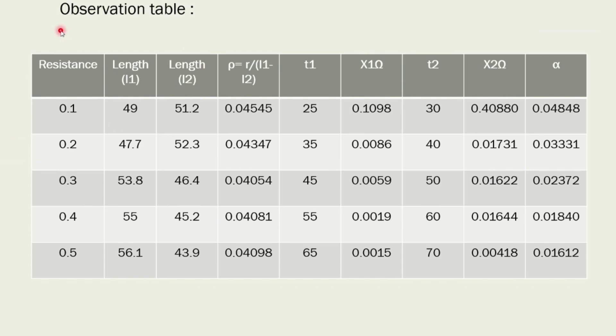Here is the observation table of this experiment. In this observation table, by using known resistance we measure length L1 and L2, and using these lengths we find resistivity by formula rho equals R by L1 minus L2. After that we find the resistance X1 and X2 which are the resistance of a coil at temperature T1 degree Celsius and T2 degree Celsius. Here we find X1 and X2 by using formula X equals R plus rho into L1 minus L2. You can see here we measure X1 and X2 for different temperatures like 25 degree Celsius, 30 degree Celsius up to 70 degree Celsius.